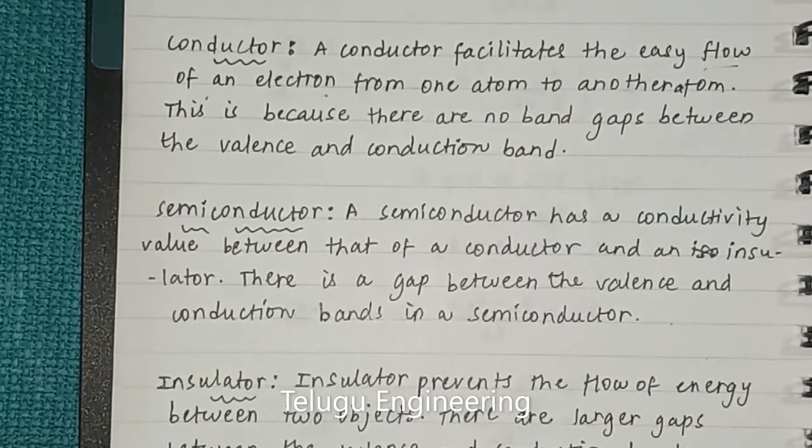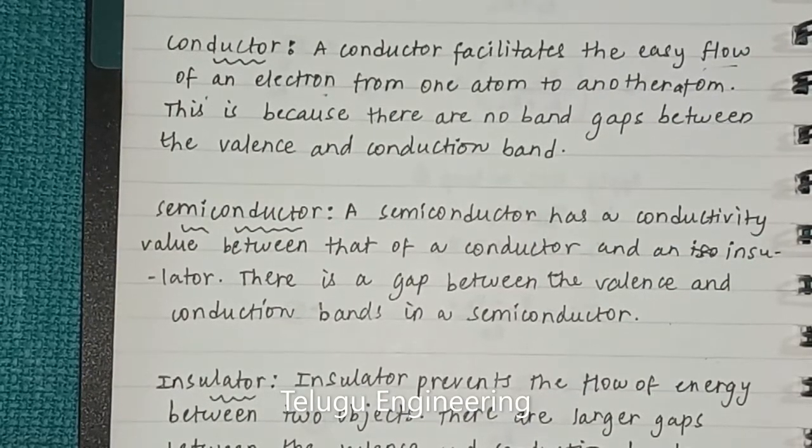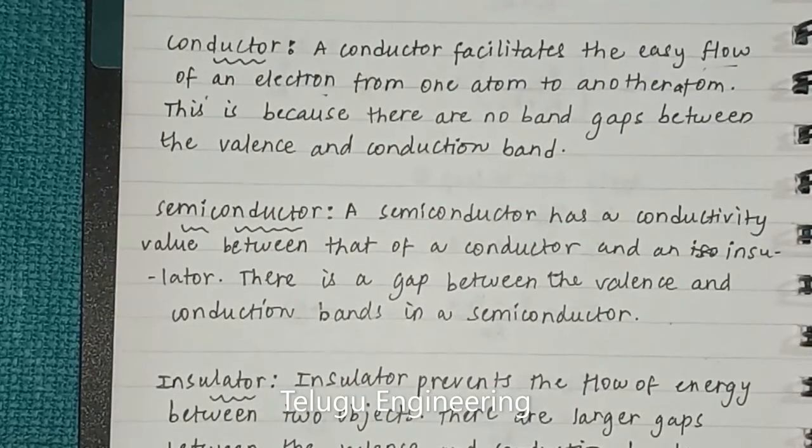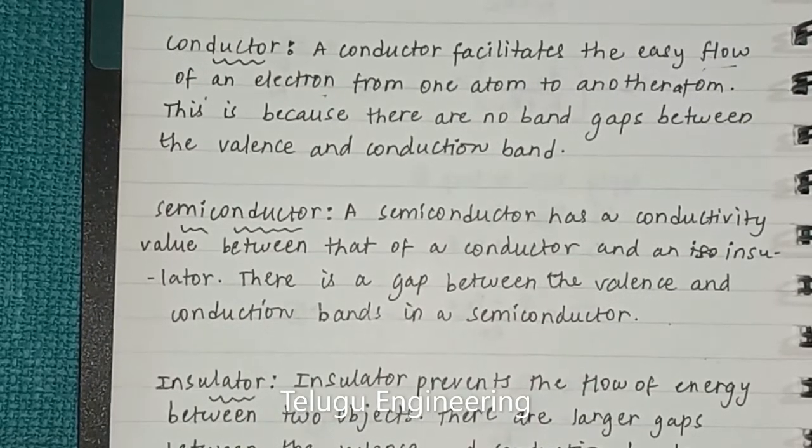Semiconductor is partially allowed under some temperature conditions. It can be easily flowed under certain conditions. Insulator means no way for electrons to flow.